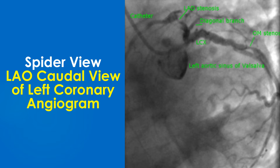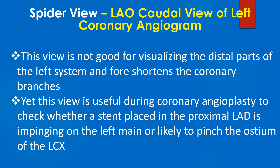This is another angiogram in spider view. In this case, the left main is not seen well as it is a delayed image. Proximal tight stenosis of the LAD is seen, as well as significant stenosis of an OM branch of the left circumflex coronary artery. Spider view is not good for visualising the distal parts of the left system and foreshortens the coronary branches.